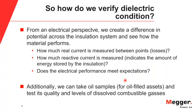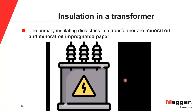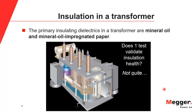The primary insulating dielectrics in a transformer are mineral oil and mineral oil-impregnated paper. If we create a potential difference across the transformer's insulation system, does one test validate insulation health? Not quite. Power factor testing assesses CHL, C-high-to-ground, C-low-to-ground insulation components, as well as C1 and C2 in a bushing. It is helpful to look at each of these systems in the transformer, and then assess what other systems remain that aren't accounted for in a power factor test.